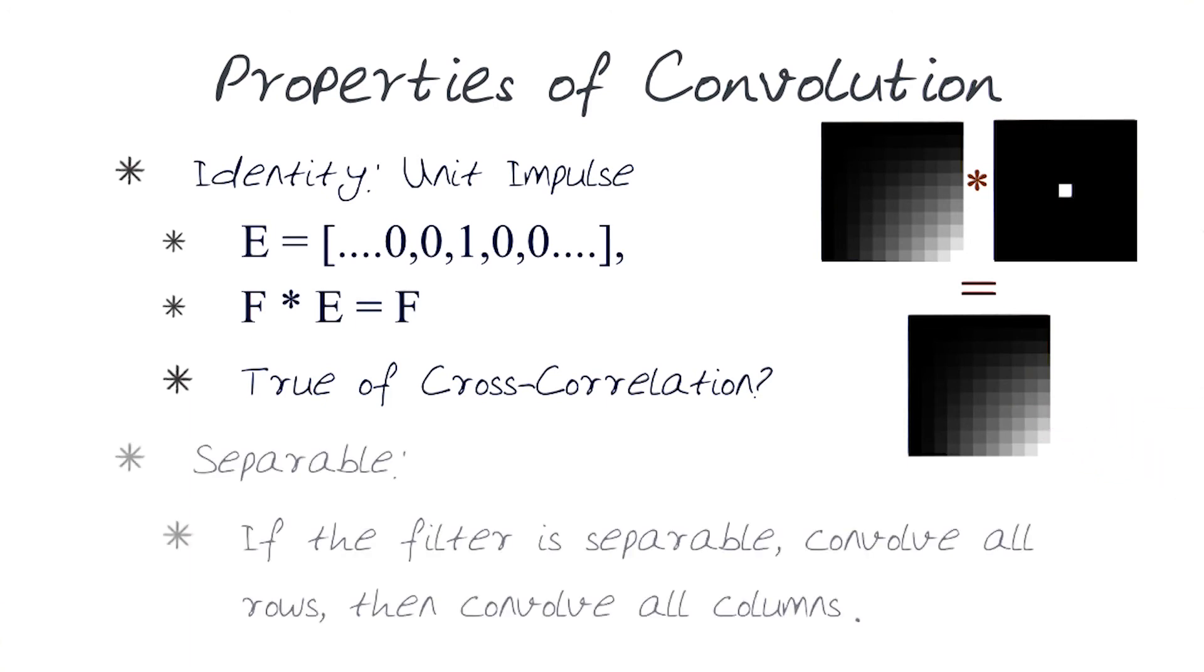One more important feature to remember is that convolution is a separable process. That basically means that we can actually do the convolution just by having a kernel that captures the rows, and then we can actually do it separately for the columns.